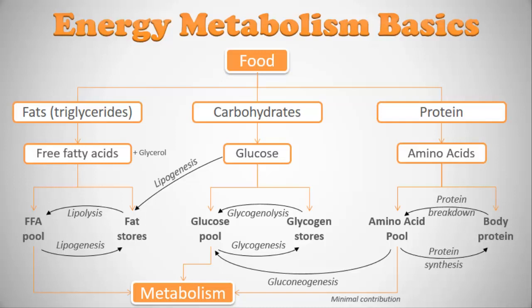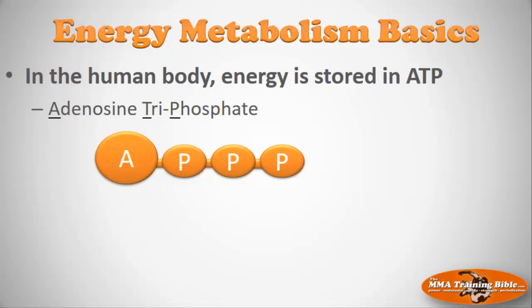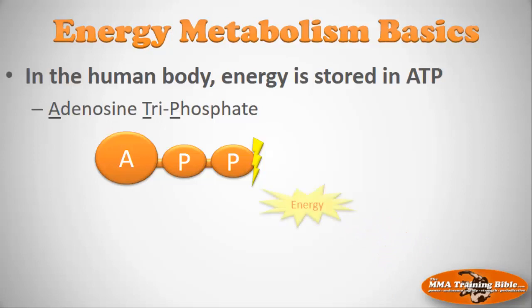In the human body, energy is stored in a high-energy molecule called ATP — adenosine triphosphate. We have the adenosine and three phosphate molecules joined together. Most of the energy is stored in the third bond that connects the third inorganic phosphate to ATP. This is a high-energy bond. When we want to contract our muscles, we break that third bond, releasing the inorganic phosphate and creating lots of energy — like a little explosion that allows muscles to contract.